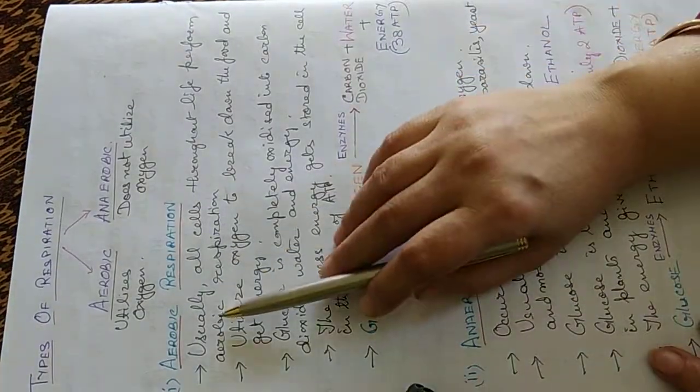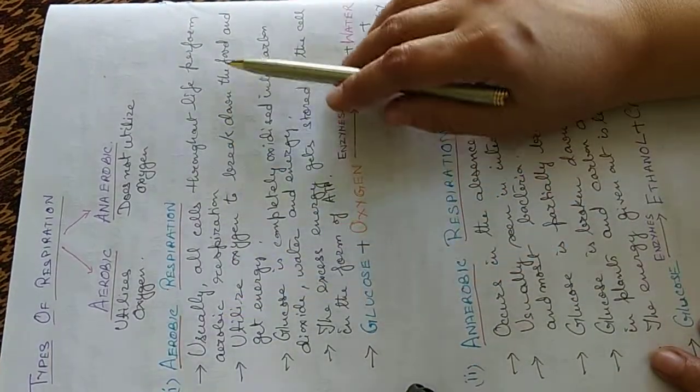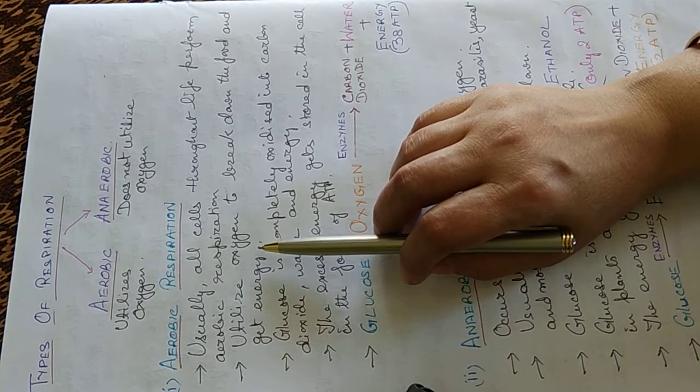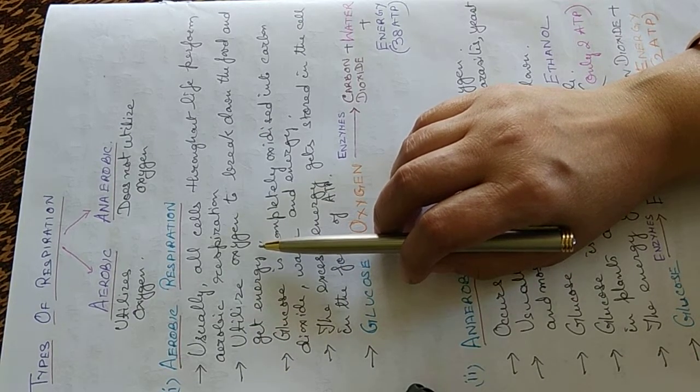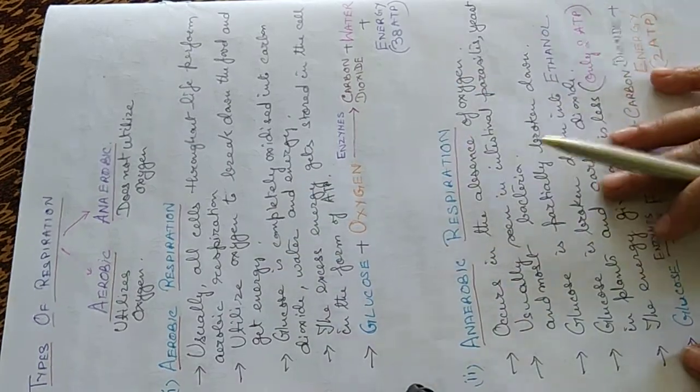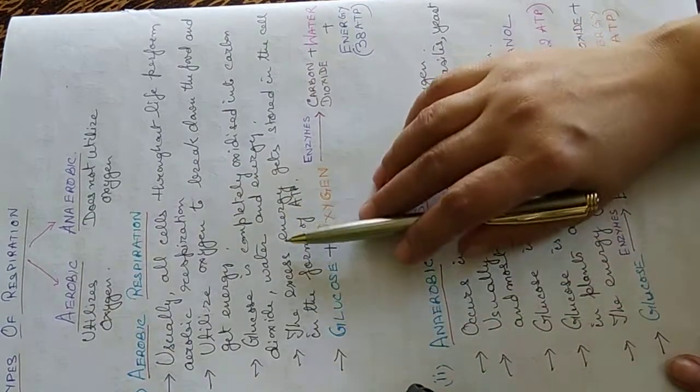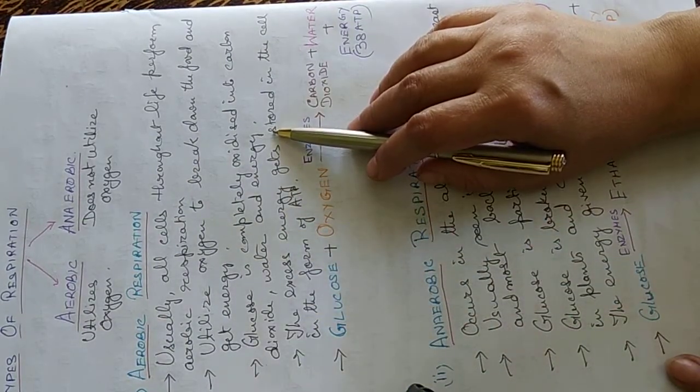Now aerobic respiration. Usually all cells throughout life perform aerobic respiration. That is they utilize oxygen to break down the food and to get the energy. The glucose is completely oxidized into carbon dioxide, water and energy in this process.